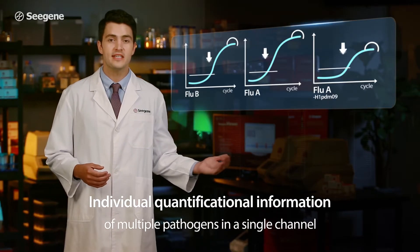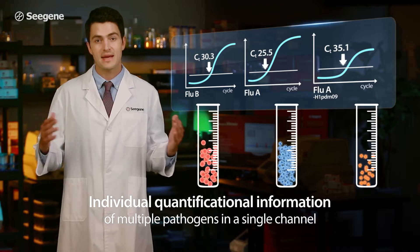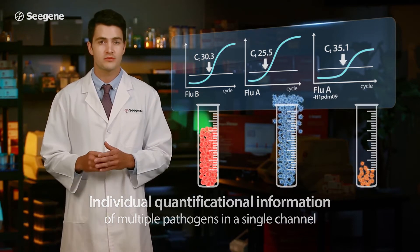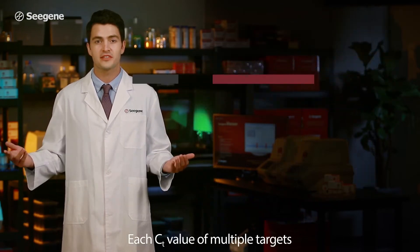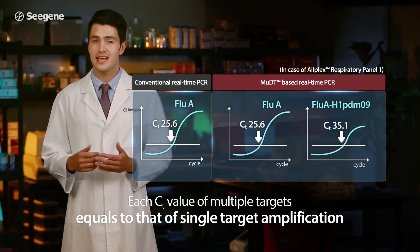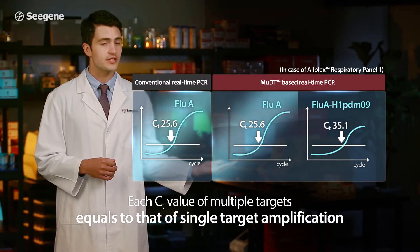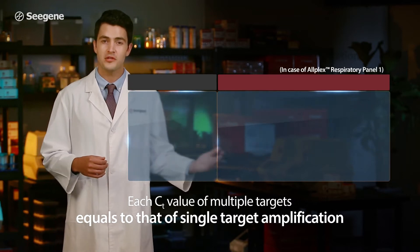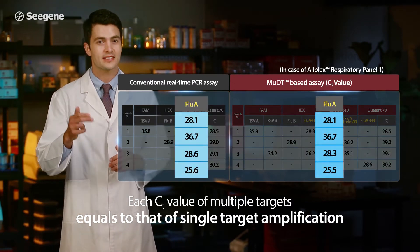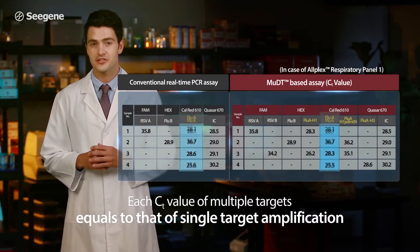MUDT technology makes it easy to quantify many individual pathogens in a single channel simultaneously. No compromises in data quality are required — multiple target detection with MUDT technology is as accurate as conventional real-time PCR technique.